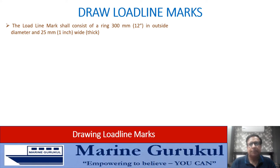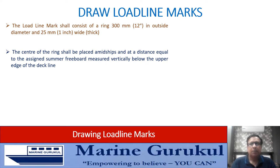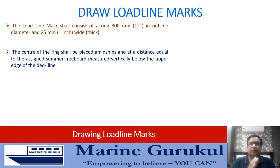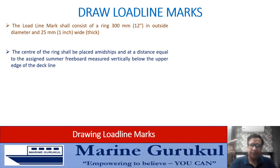The load line mark consists of a circle or ring whose outer diameter is 300 mm and the thickness of the ring is 25 mm. The center of the ring is placed amidships — just as the center of the deck line was amidships — at a vertical distance from the upper edge of the deck line equal to the assigned summer freeboard of the vessel.